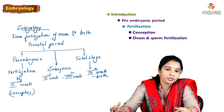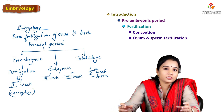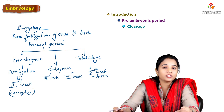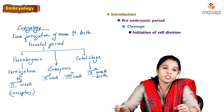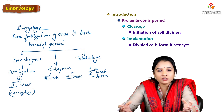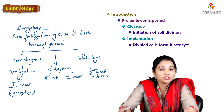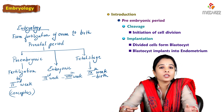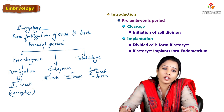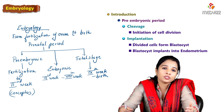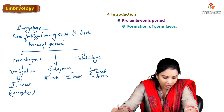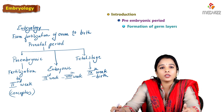The preembryonic period includes fertilization — where the ovum is fertilized by the sperm and the fertilized product is the zygote. The zygote undergoes cleavage, which is the initiation of cell division. The divided cells form a group of cells, further dividing to form a blastocyst. This blastocyst then gets implanted inside the wall of the uterus within the endometrium, which is called implantation. After implantation, the blastocyst starts developing into germ layers.